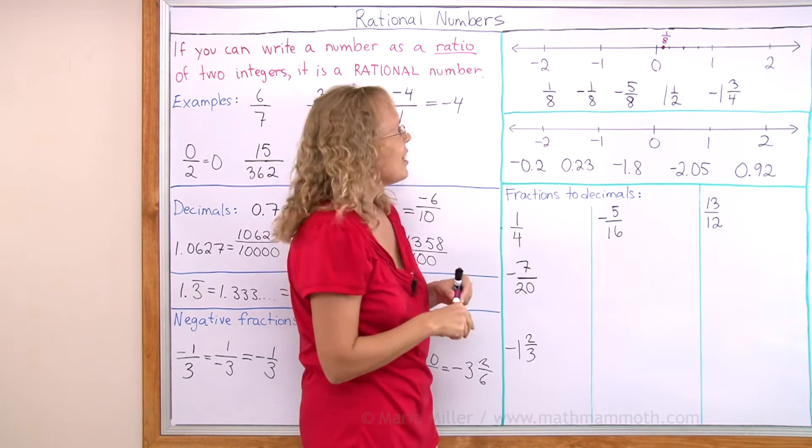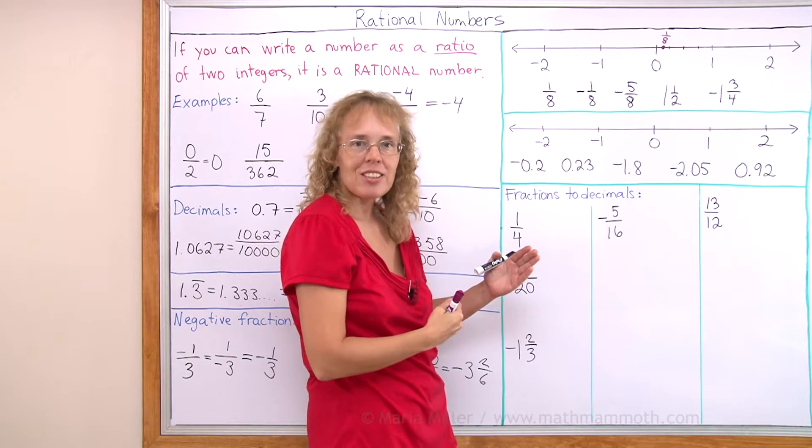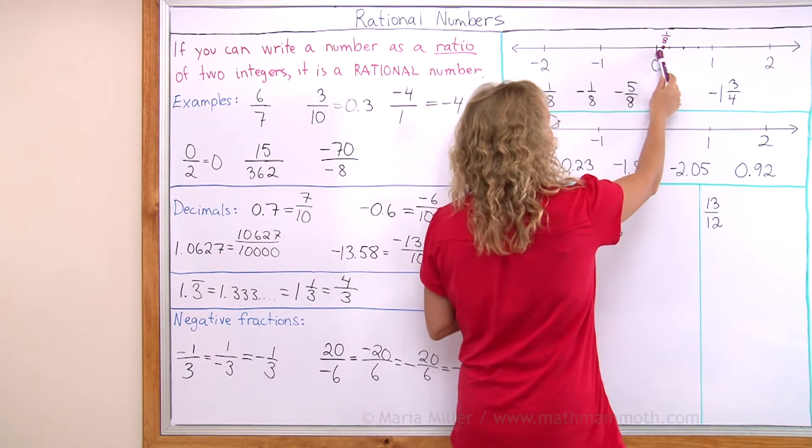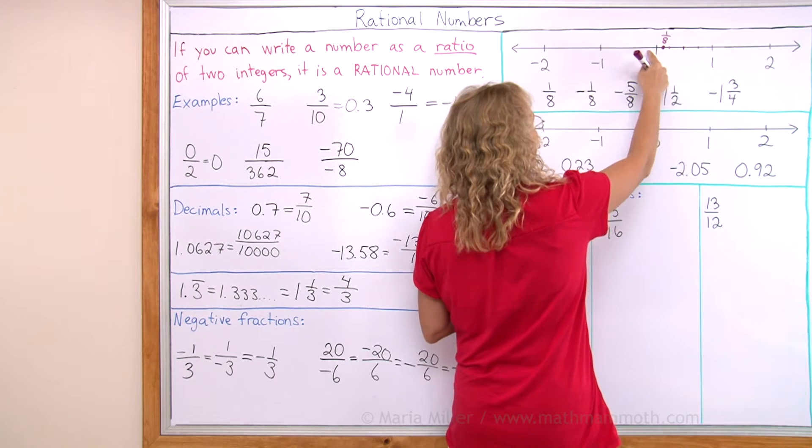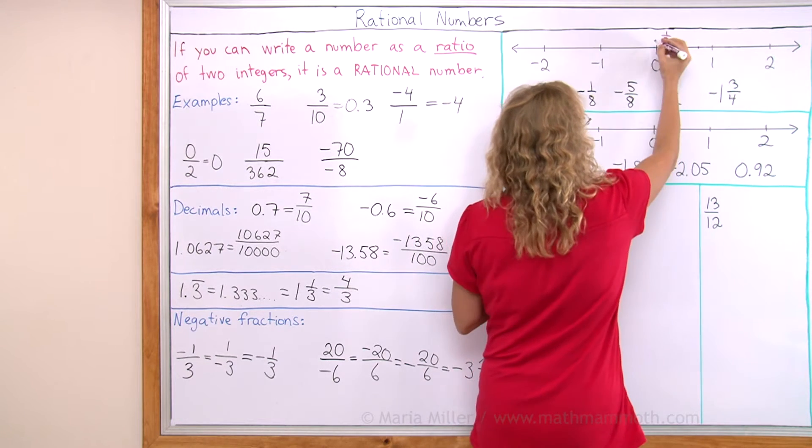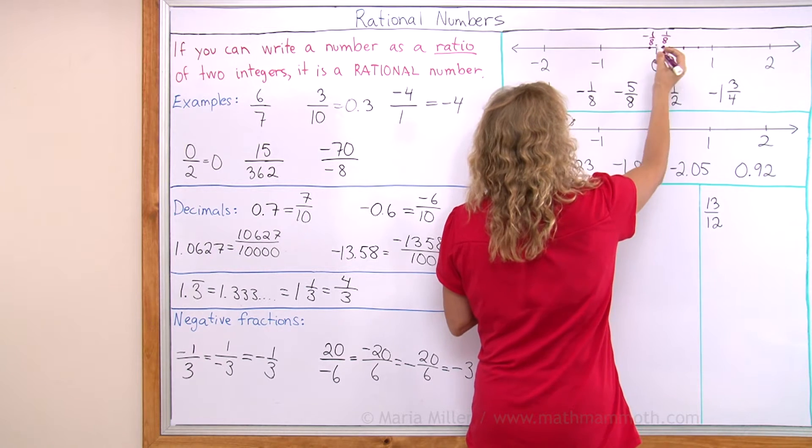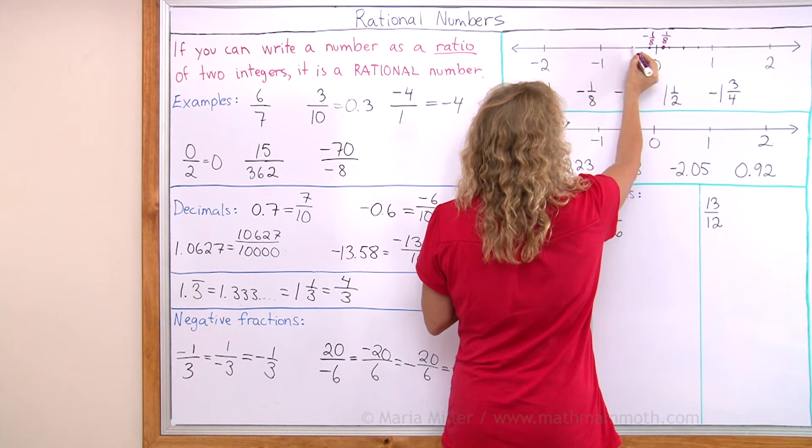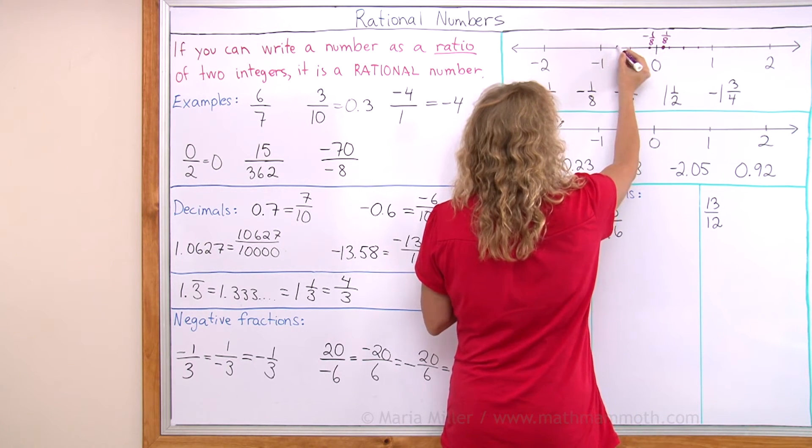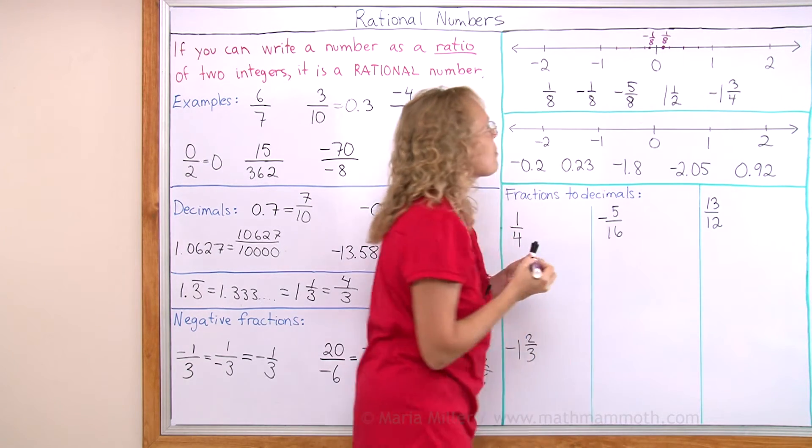Negative 1/8 will be on the other side of 0, but equally far away as 1/8 is. It's right there, it's like a mirror point for 1/8. But you can also think of it, you can divide this number line into halves and fourths and then into eighths.